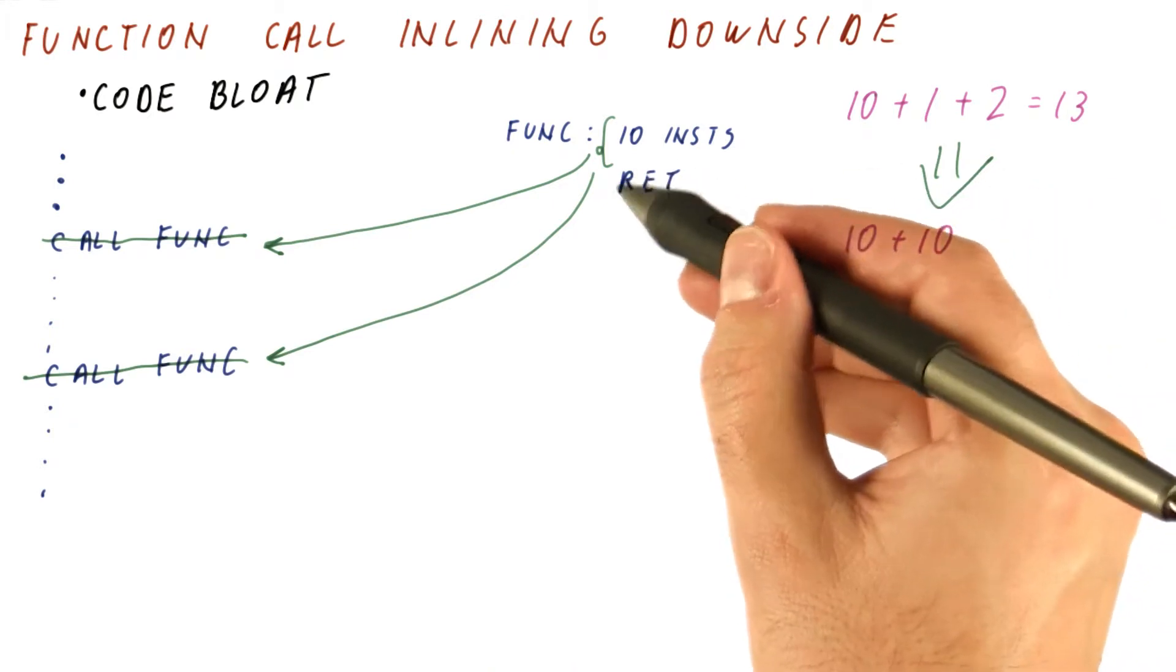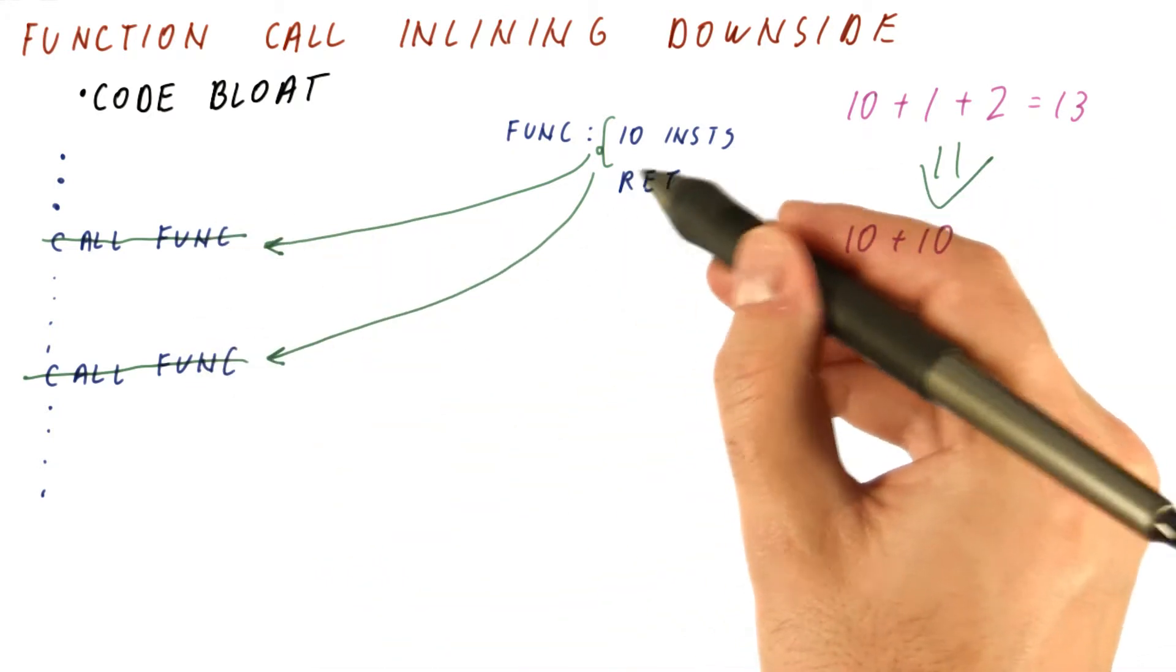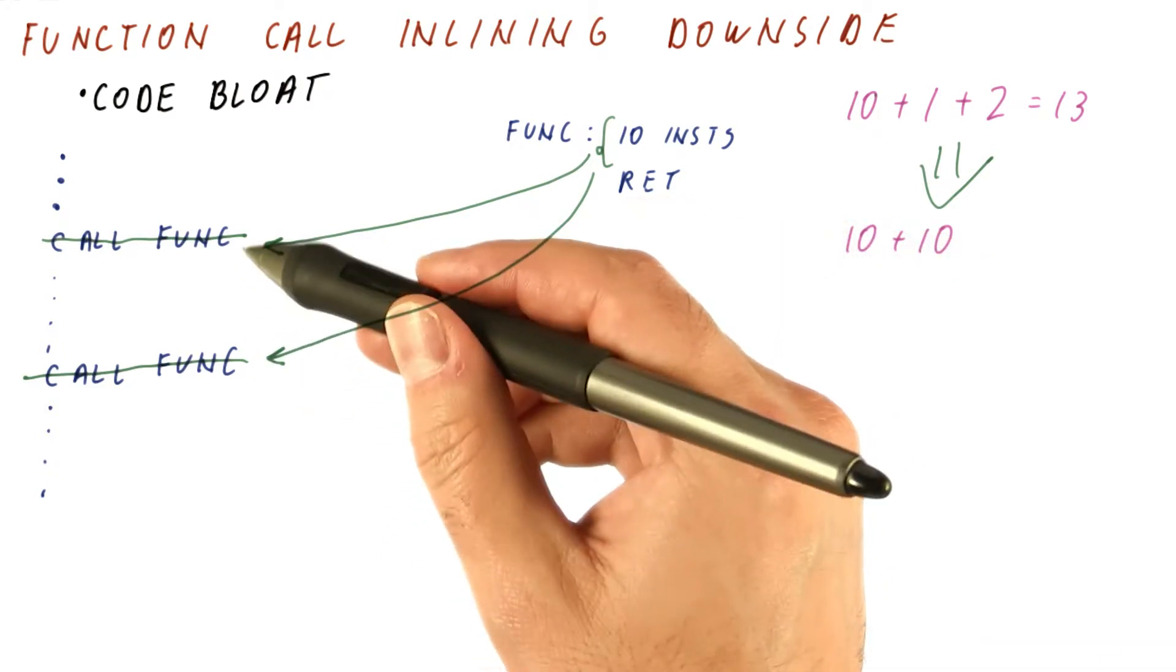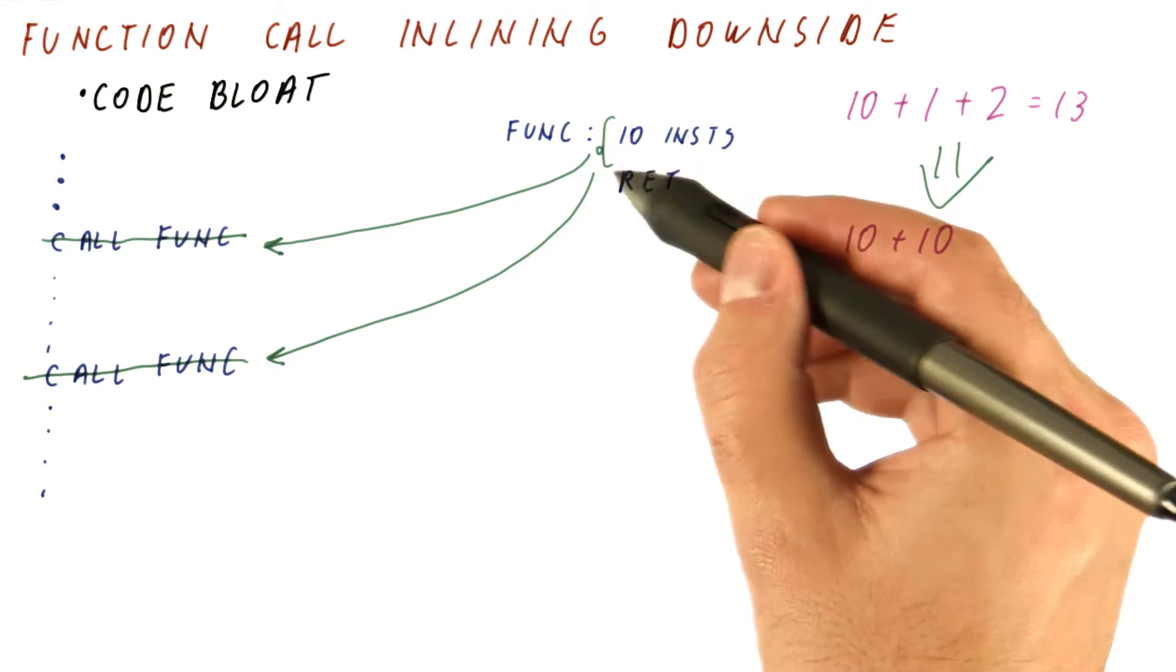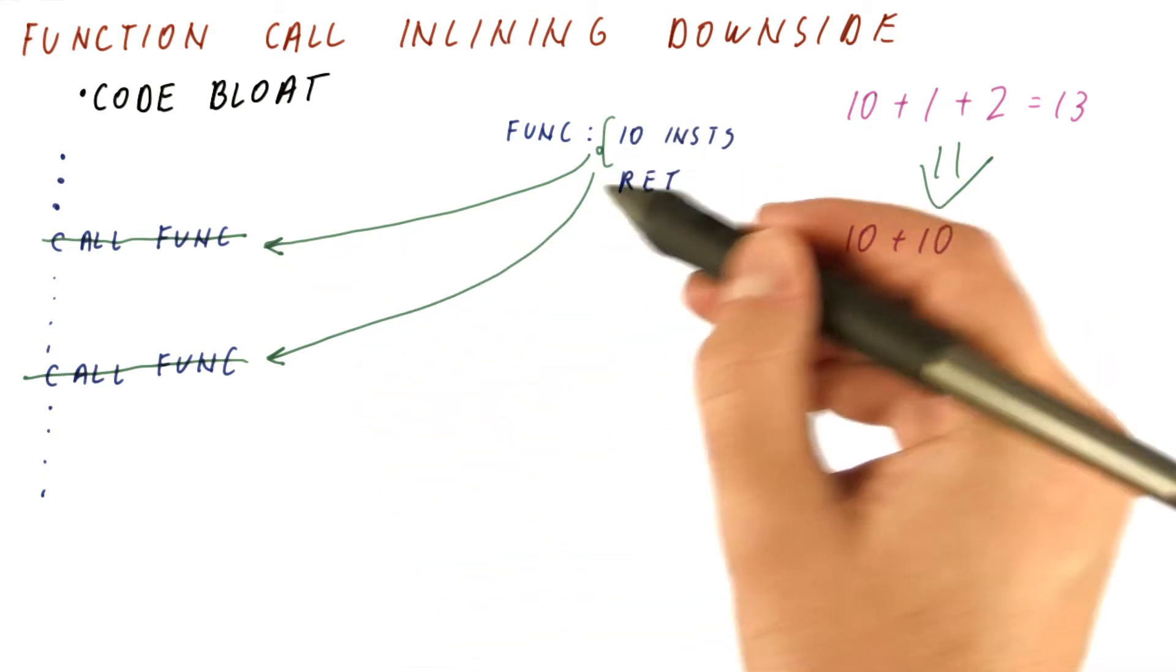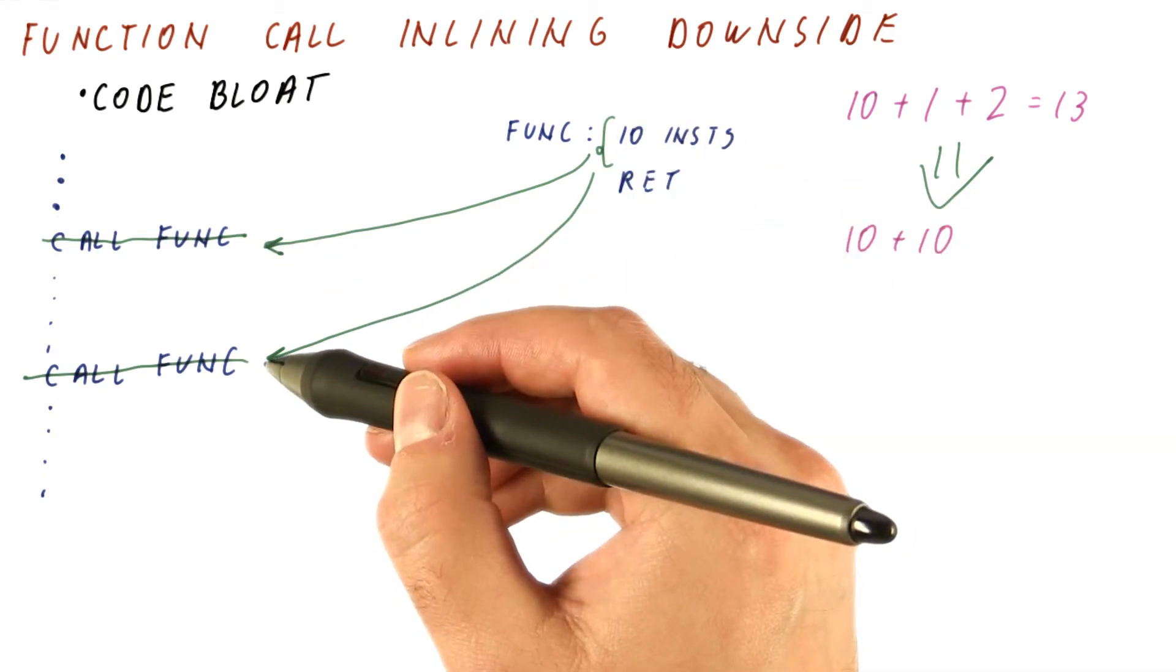And although we eliminated the overheads, and there are no longer function calls and returns, and possibly some small amount of argument copying and so on. Still, we have replicated the body of the function as many times as there are places in the code that call it.